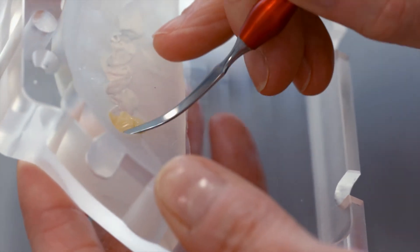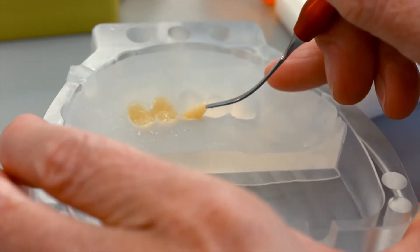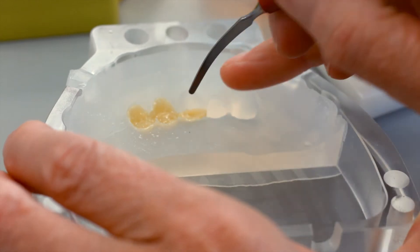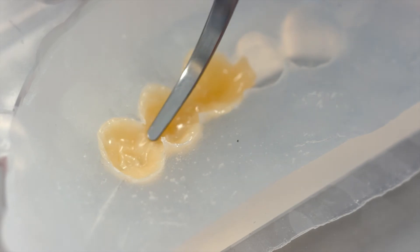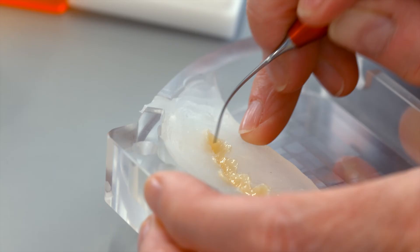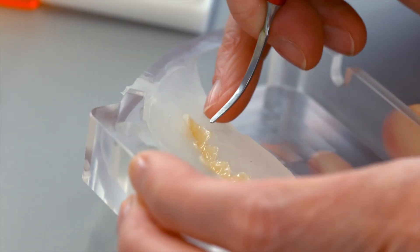Load the opposing mold with a sufficient amount of SR-NEXCO composite for the first Denton press cycle. Use a spatula to apply the material. Do not overlap the composite to prevent air from being trapped. The aim is to achieve homogeneous, bubble-free press results.